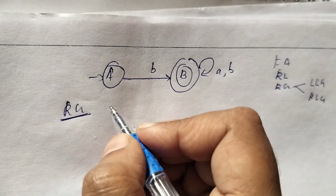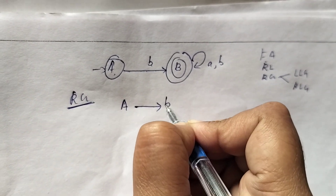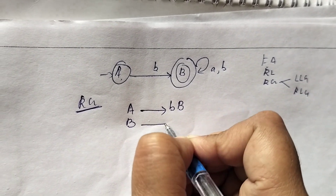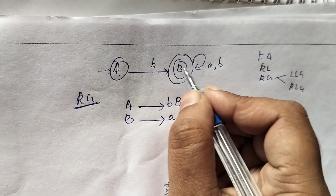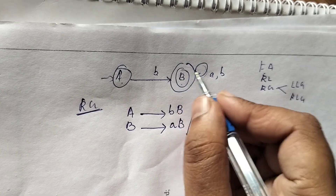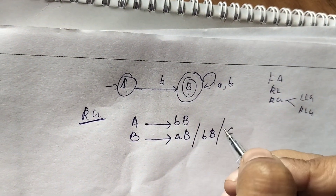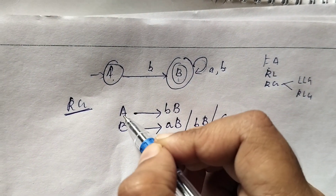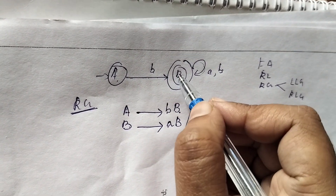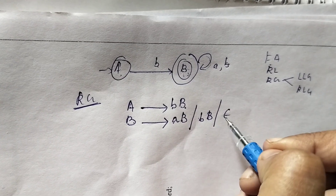Writing the grammar: from state A, while seeing input symbol 'b', it goes to state B — so A → bB. From state B, while seeing input symbol 'a', it moves to the same state — B → aB. While seeing input symbol 'b' from state B, it moves to the same state — B → bB. Since B is the accepting state, we also add B → ε.